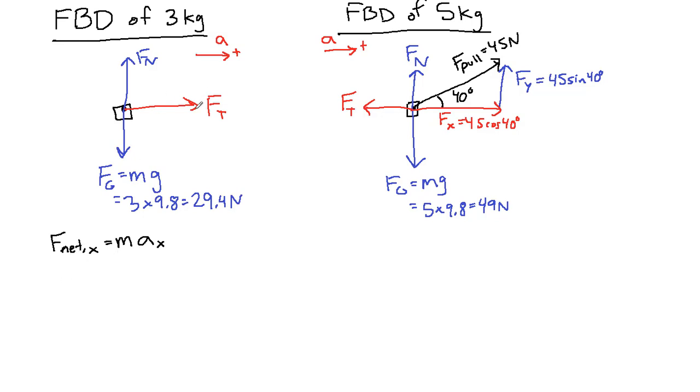The only force that we have pointing in the horizontal direction here is tension. So we have tension equals 3 times our unknown a. We have two unknowns here, so we have to wait and come over to the other diagram.